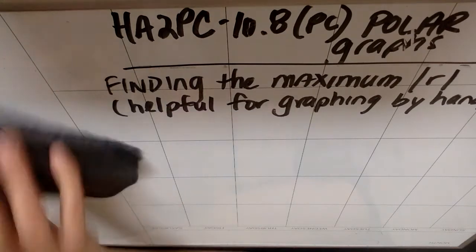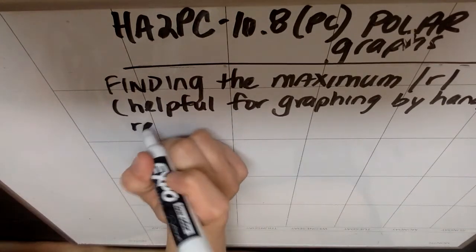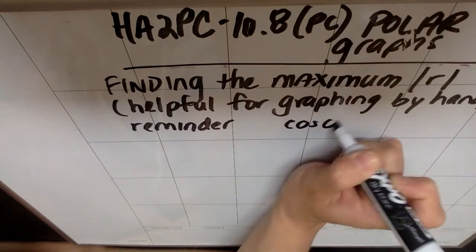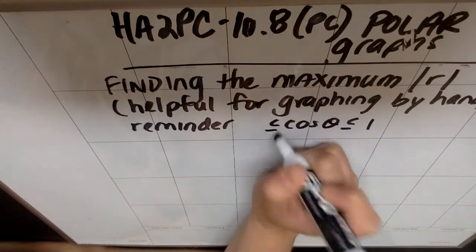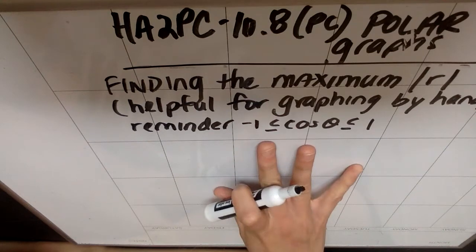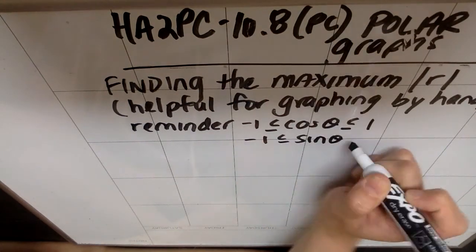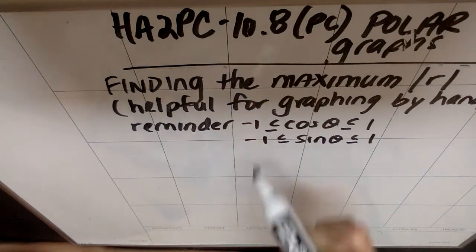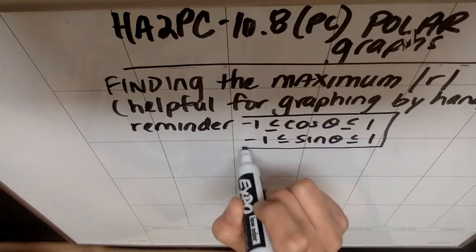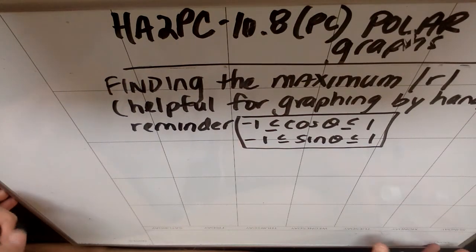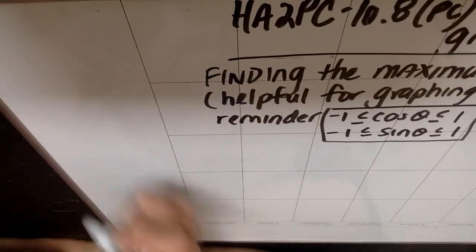Actually before I do that, just a reminder. So as a reminder, cosine of theta maxes out at 1 and has a minimum possible value at negative 1, and the same thing is true for sine. So essentially, all of what we're going to be doing right here is using these two pieces of information. And it's not just cosine theta. Cosine of anything maxes out at 1 and mins out at negative 1. So let's walk through this.